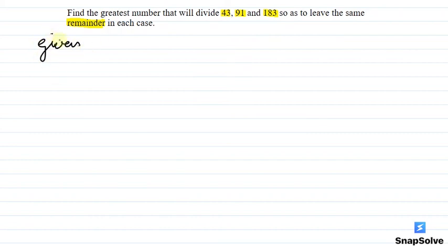Given are the numbers: 43, 91, and 183. Now, to solve this problem, subtract the smallest number from both the highest numbers.